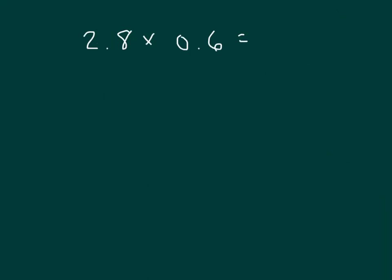Here's another problem. We have 2.8 times 0.6. Let's rewrite this as fractions. That's 28 tenths times 6 tenths. When we multiply tenths by tenths, we get hundredths.